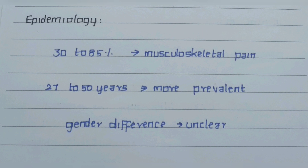The epidemiology shows that 30 to 85% of people who acquire this syndrome have severe musculoskeletal pain, and it is more prevalent in those aged 27 to 50 years. However, gender difference is unclear.